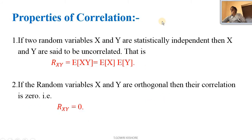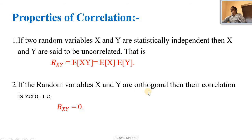Properties of correlation: Number one, if two random variables x and y are statistically independent, then x and y are said to be uncorrelated. That is, R(x,y) equal to expectation of x·y equal to expectation of x into expectation of y. Number two, if the random variables x and y are orthogonal — meaning perpendicular to each other — then their correlation is zero, represented mathematically as R(x,y) equal to zero.